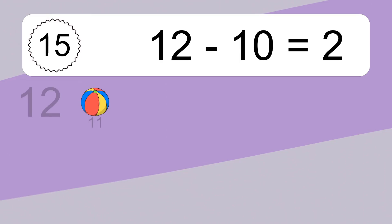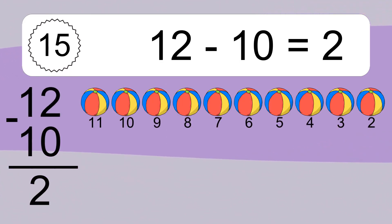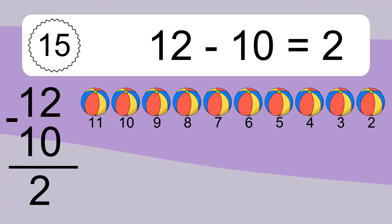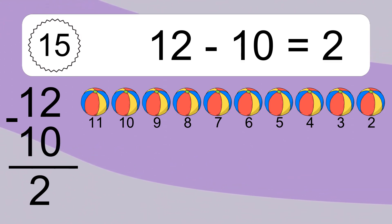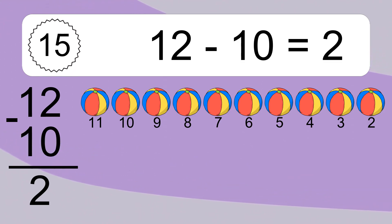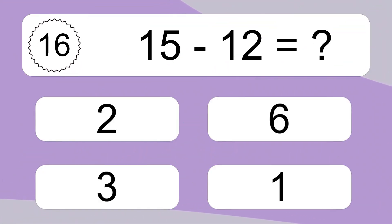12 minus 10 equals what? 12 minus 10 equals 2. Let's count it: 11, 10, 9, 8, 7, 6, 5, 4, 3, 2.